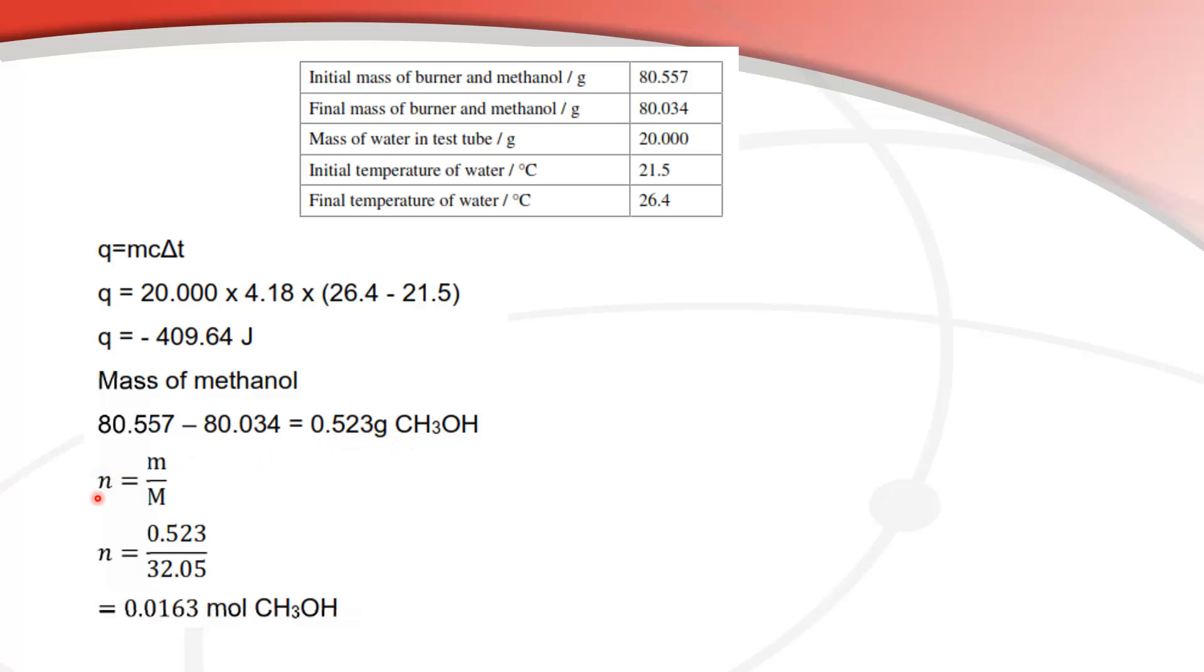I can then go to moles, change to moles that's number of moles equals mass divided by molar mass. So my mass is 0.523 and the molar mass of methanol is 32.05 and that gives me 0.0163 moles of methanol.